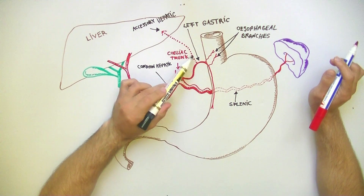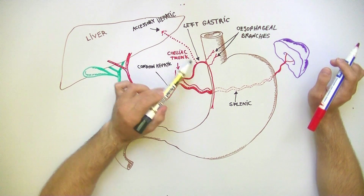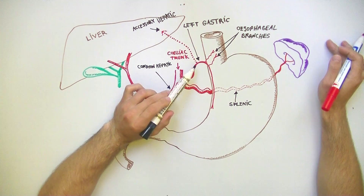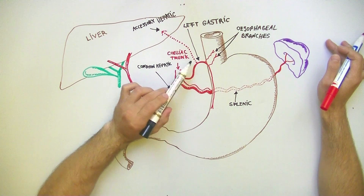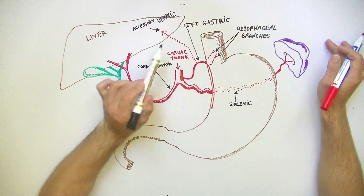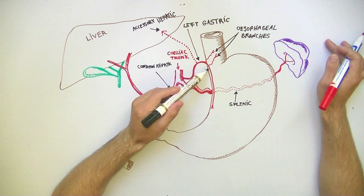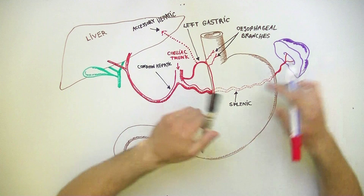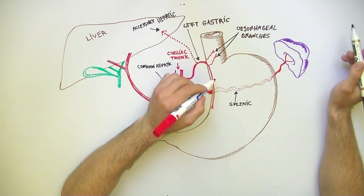Keep in mind that the accessory hepatic artery is an anatomical variant, so it is not always present — actually, it occurs rarely. As the left gastric artery runs down the lesser curvature of the stomach, it gives gastric branches.